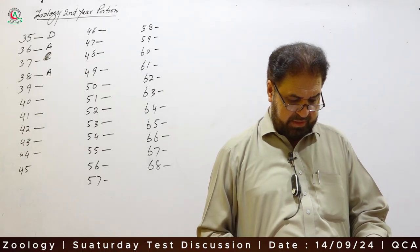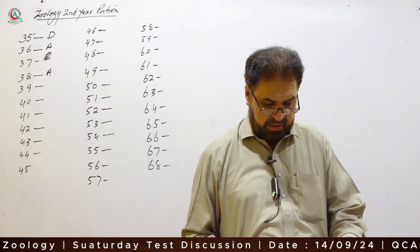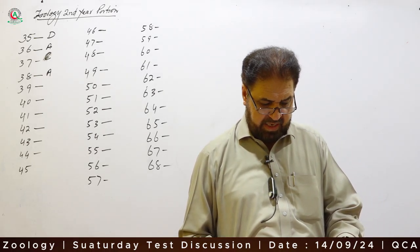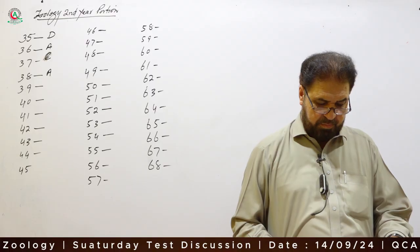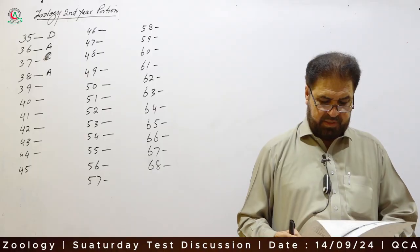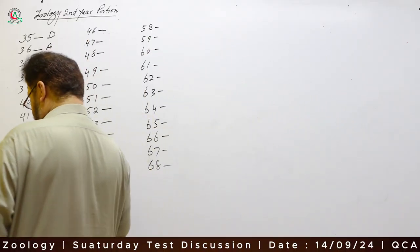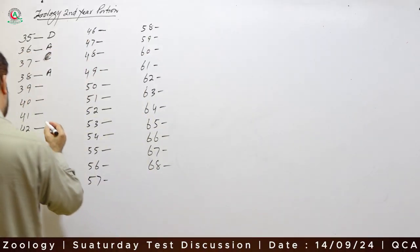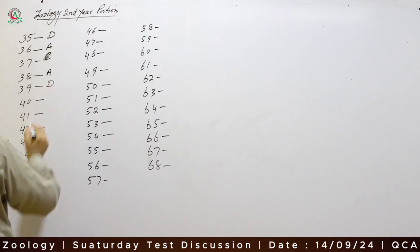Question 39: Breathing rate becomes double when oxygen concentration decreases below 20%. Option D is the correct answer. Decrease in oxygen concentration increases the breathing rate.